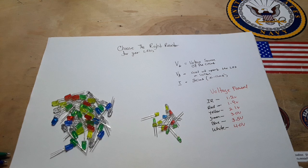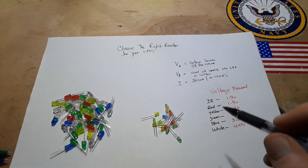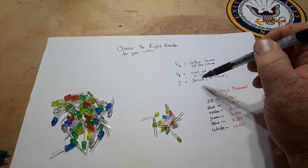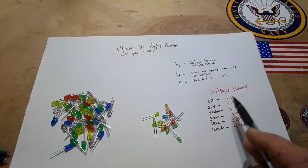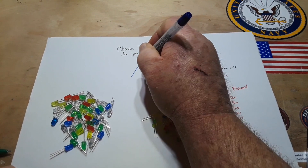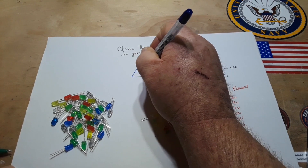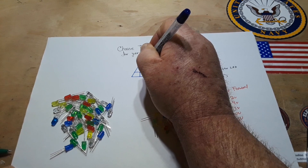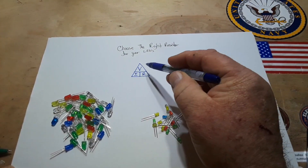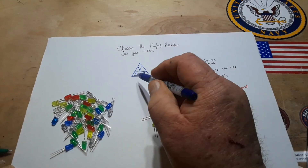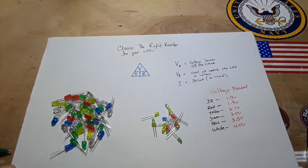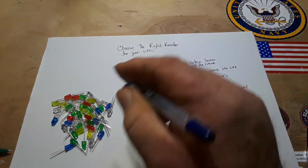Now we know what we need: V+, forward voltage, and target current. We can work this out using Ohm's Law. The Ohm's Law triangle tells us that voltage equals current times resistance. To find voltage: V = I × R. To find resistance: R = V / I. To find current: I = V / R.